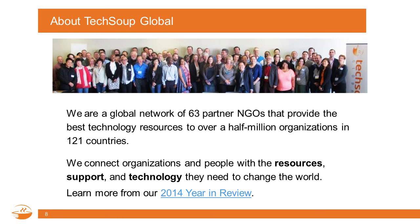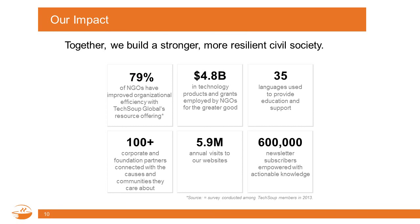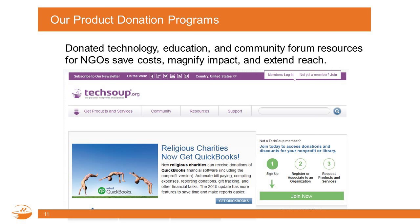TechSoup is a global nonprofit network of 63 partner NGOs providing technology, knowledge, resources, and donations to organizations in 121 countries around the world. We serve 615,000 NGOs worldwide. The green dots on our map show where you can find local meetups to connect with local technology do-gooders and social changemakers in your area at NetSquared. The biggest part of what we do is our donation programs run along with companies like Microsoft, who donate technology products to nonprofits, libraries, foundations, charities, and churches — to the tune of nearly $5 billion in grants and technology products. Learn more at TechSoup.org.